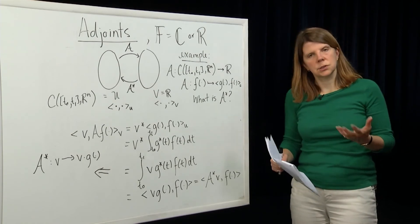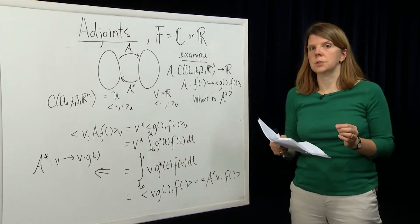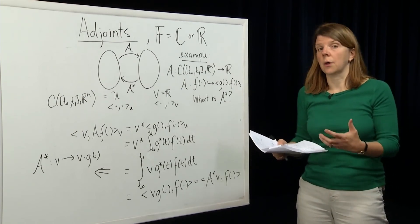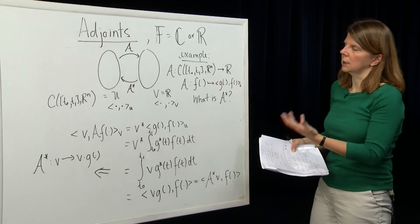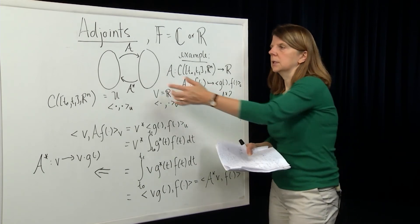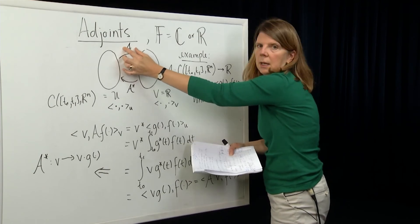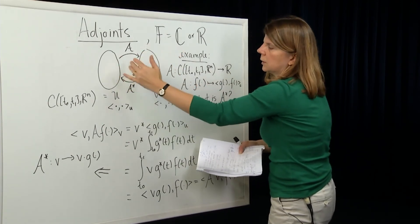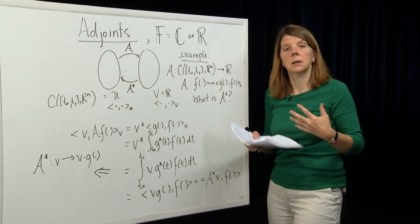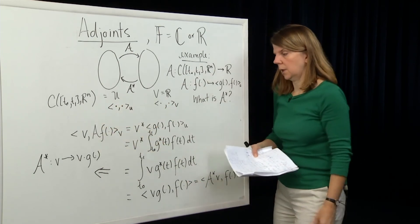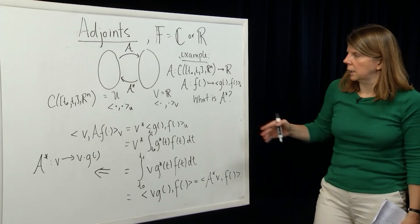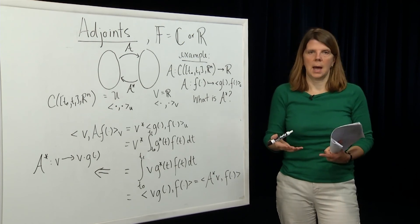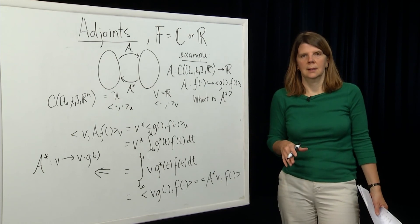So in this module, based on our definition of inner products, we've defined what it means for vectors to be orthogonal, used that to define orthogonal complements of subspaces, looked at properties of orthogonal complements, and defined the adjoint map. Given a continuous linear map A — not necessarily between finite dimensional vector spaces — we can derive an adjoint map A star, which is also continuous and linear, defined through the inner product. We had a nice example illustrating how to derive the adjoint given a map and the inner products on the underlying spaces. Thank you very much.